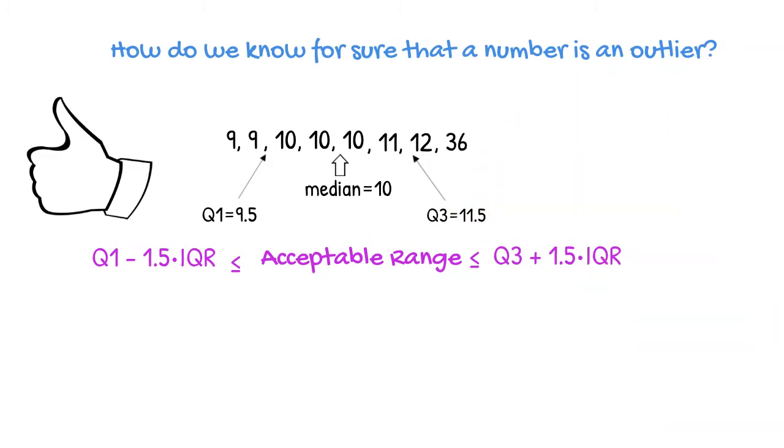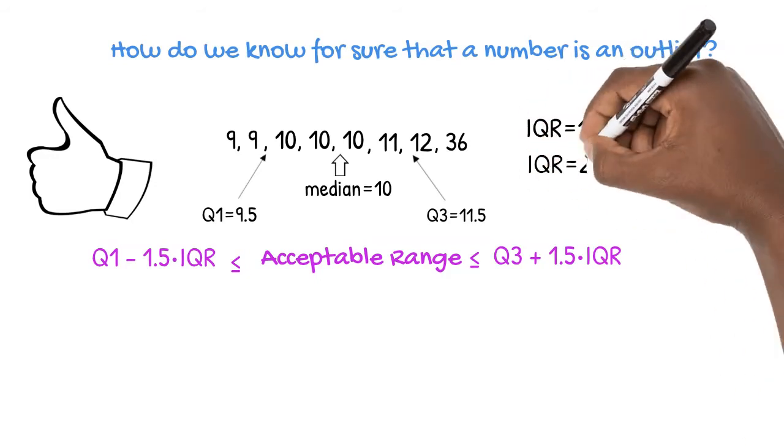We also need the interquartile range, the difference between the upper and lower quartiles. Interquartile range, IQR, is equal to 11.5 minus 9.5. The interquartile range is equal to 2.